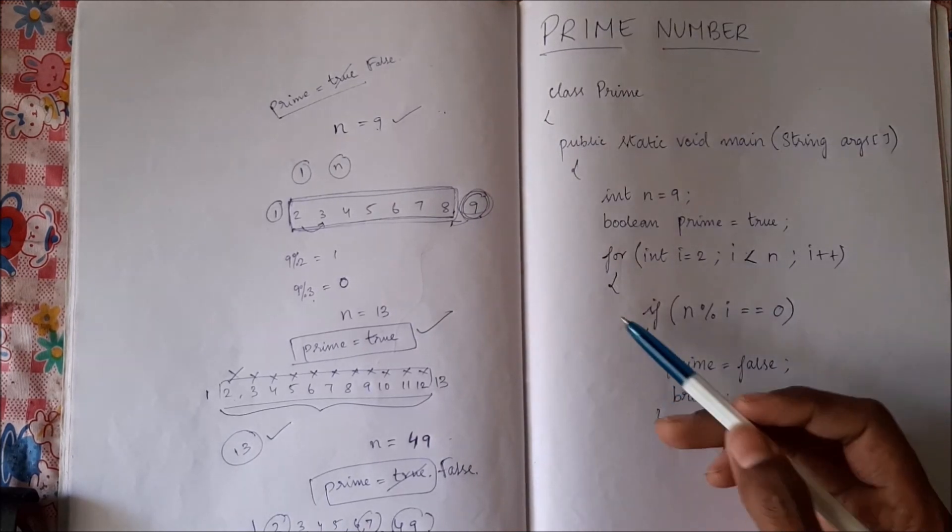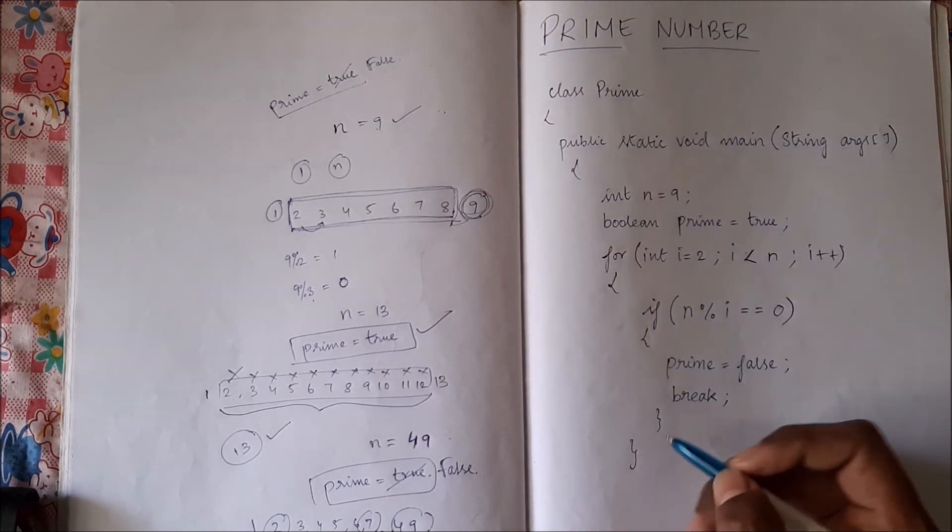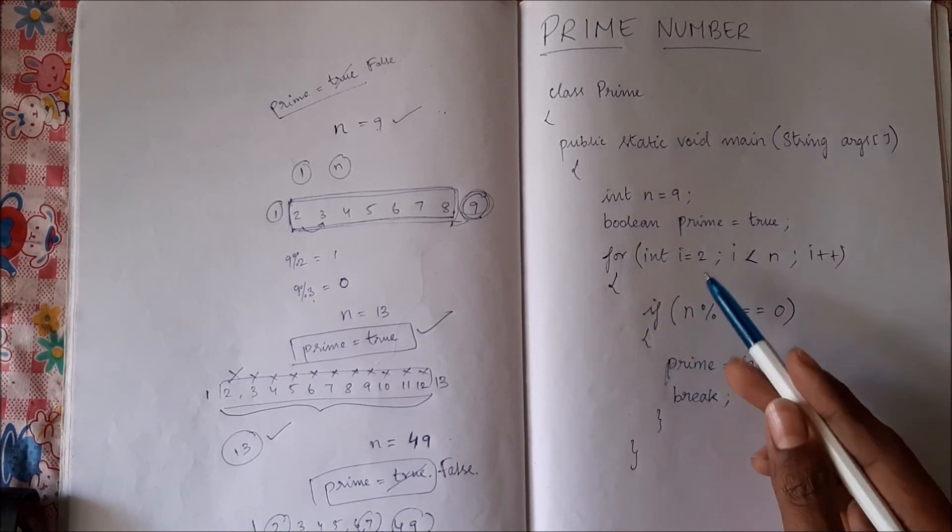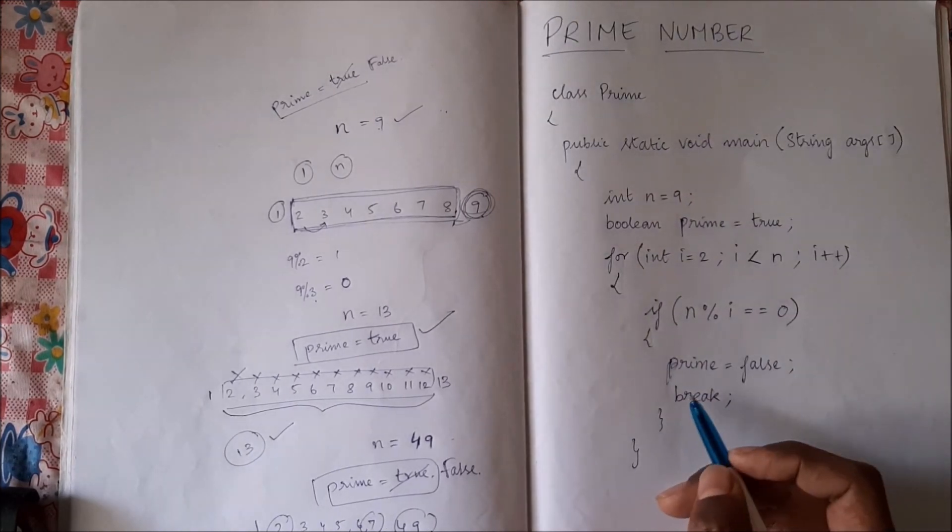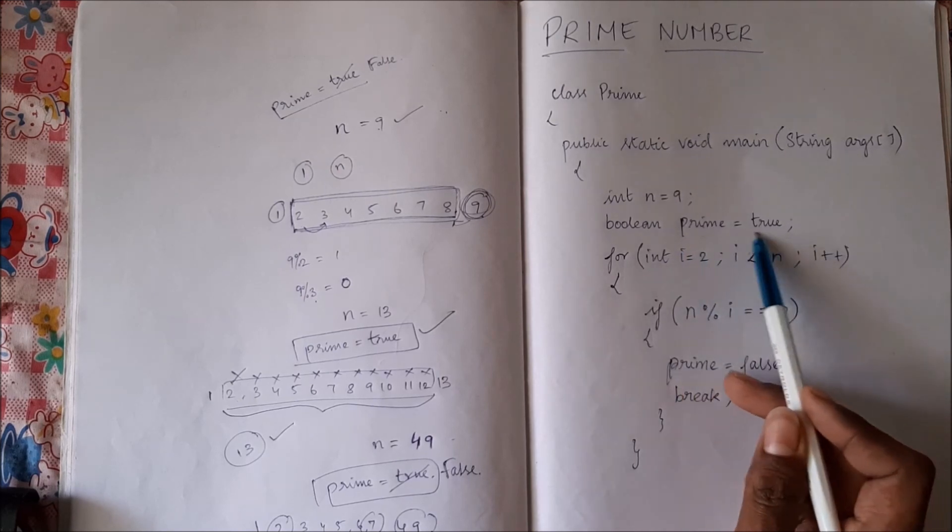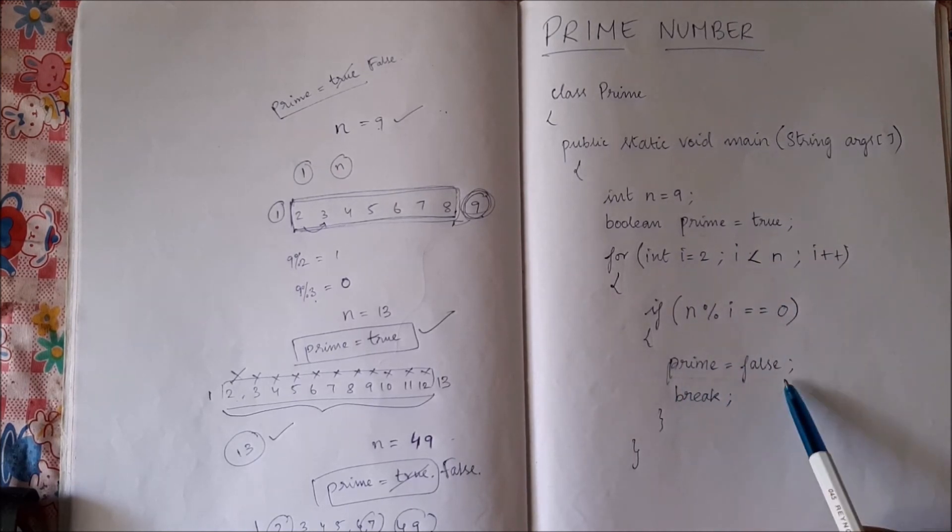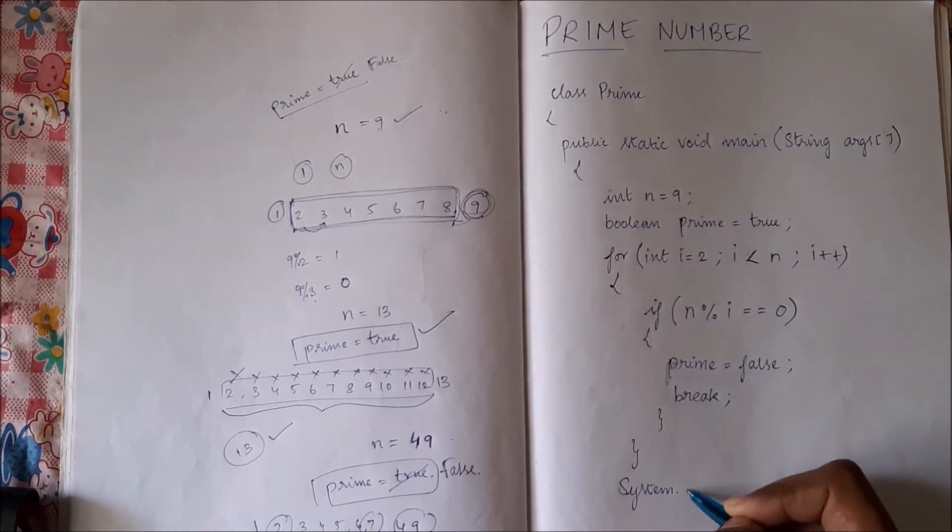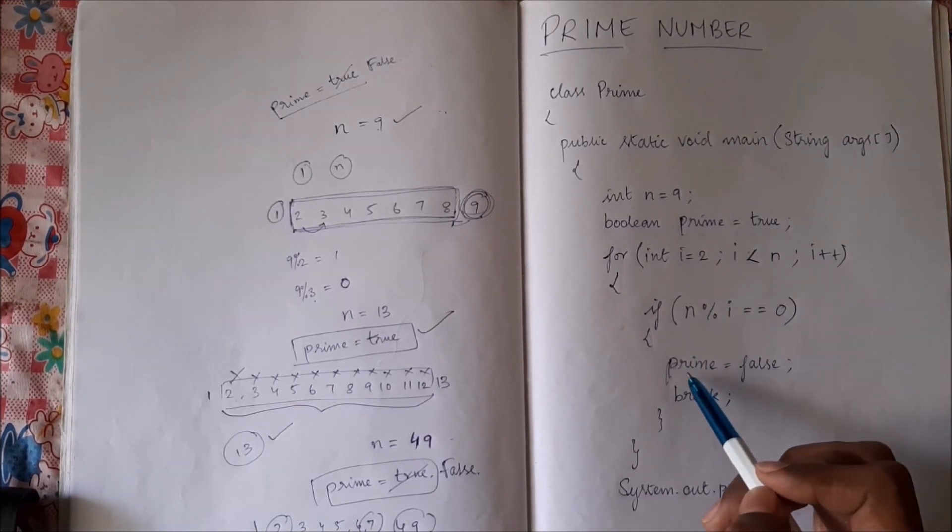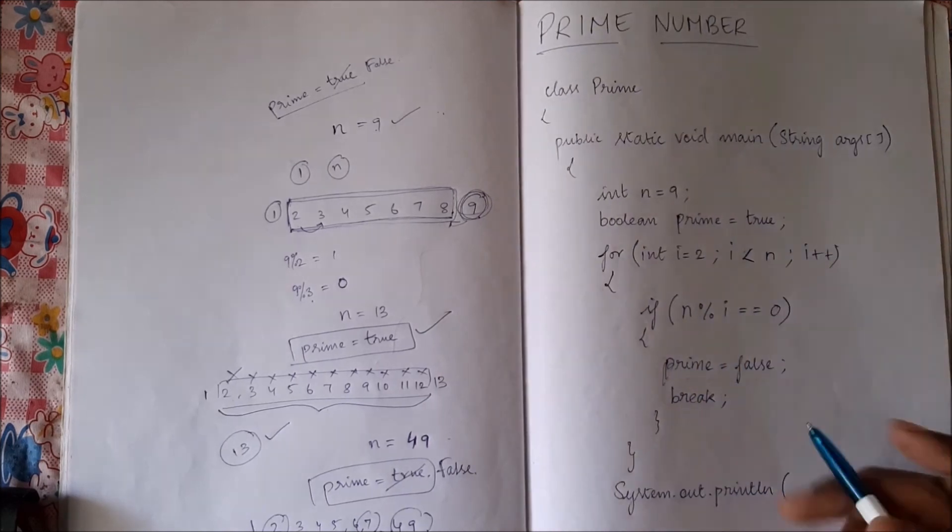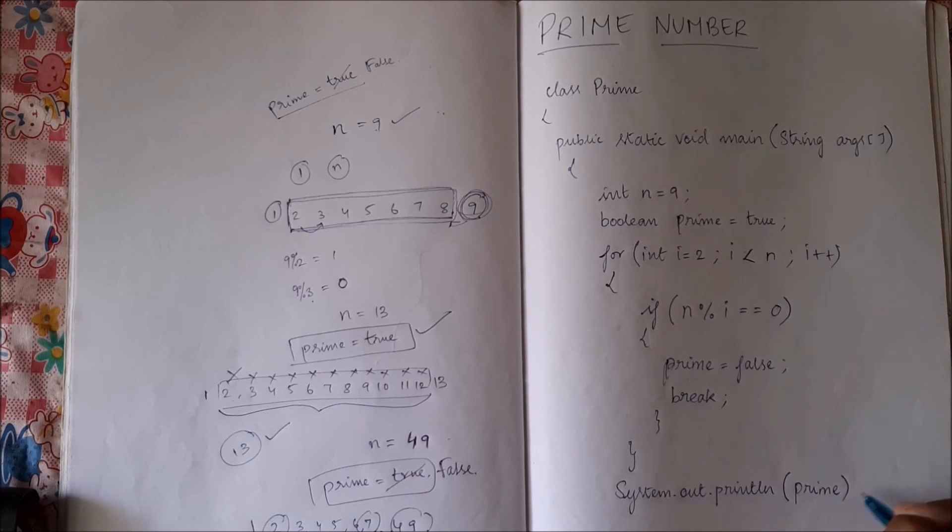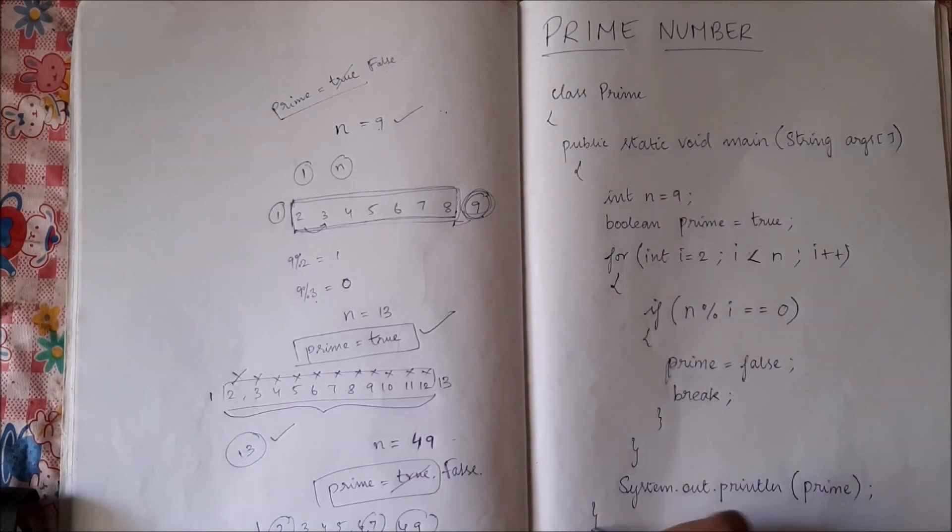This if, then this for. So once this loop runs, we will be either having true or false. So we will simply print that statement. We will simply print this variable prime. It will be having either true or false depending upon our input.